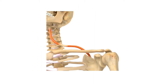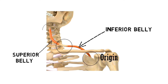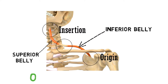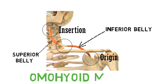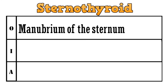This encircled region is the origin of the muscle, that is the scapula, and this is the inferior belly. Here it attaches with the superior belly — this is the superior belly — and here it attaches to the hyoid bone. So this is the omohyoid muscle.